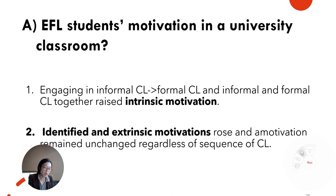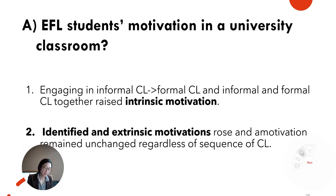Identified and extrinsic motivation rose regardless of sequence of cooperative learning. There are three possible explanations for this. One could be that Japanese students learn English in an EFL environment, not ESL, where they are frequently reminded that English will help them in the future. This belief may be understood by students, but many may not have internalized it yet, because they do not use English on a daily basis. The second reason could be because for Japanese students, much emphasis is placed on getting good scores from when they are young. Thus, they may feel a strong need to do well on exams. Lastly, timing of the study could have increased identified and extrinsic motivation — the study was conducted before COVID-19 when Japan was preparing to host the 2020 Olympics, creating an atmosphere that Japanese people should learn English to communicate with foreigners. Any of these components, or any combined, may have helped increase identified and extrinsic motivation.